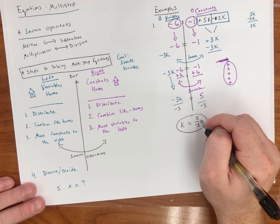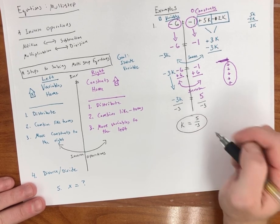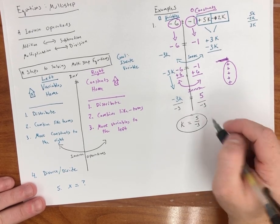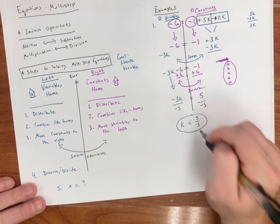Can we reduce this further? Or 5 divided by 3, can that be reduced? No. So this is already reduced. k is equal to 5 over negative 3.